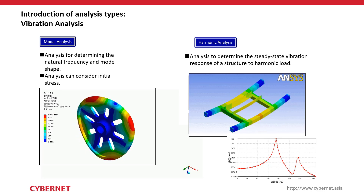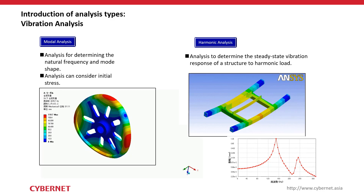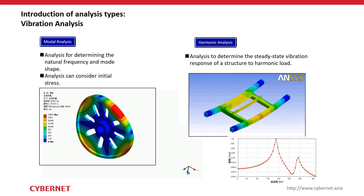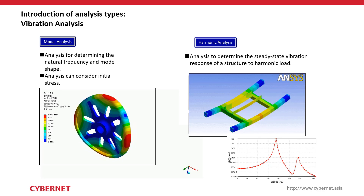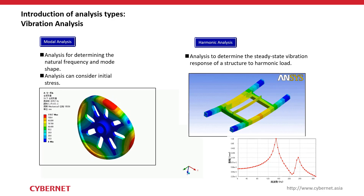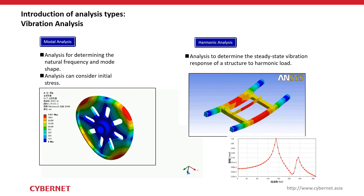For vibration analysis, ANSYS Mechanical provides several options. Modal analysis determines the natural frequency and mode shapes of your structure — this is valuable for avoiding resonance, so you can design your structure to operate at frequencies that do not resonate. Harmonic analysis determines the steady-state vibration response of a structure due to a harmonic load, evaluating displacement, stress, and strain as responses to the excitation.